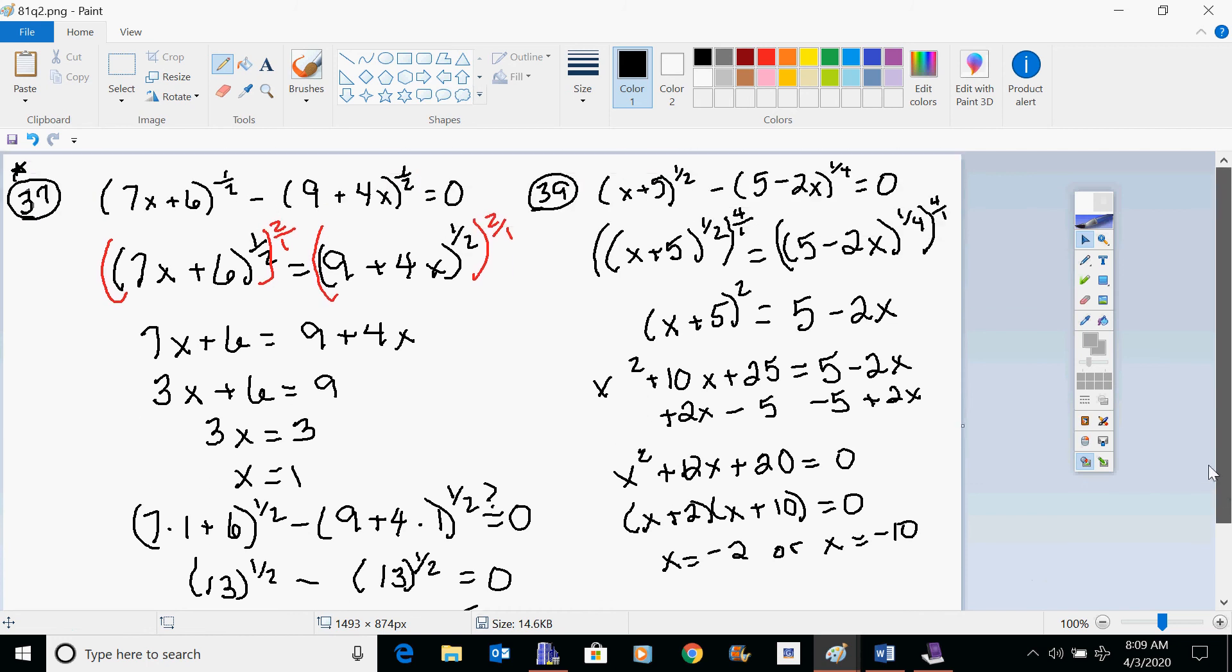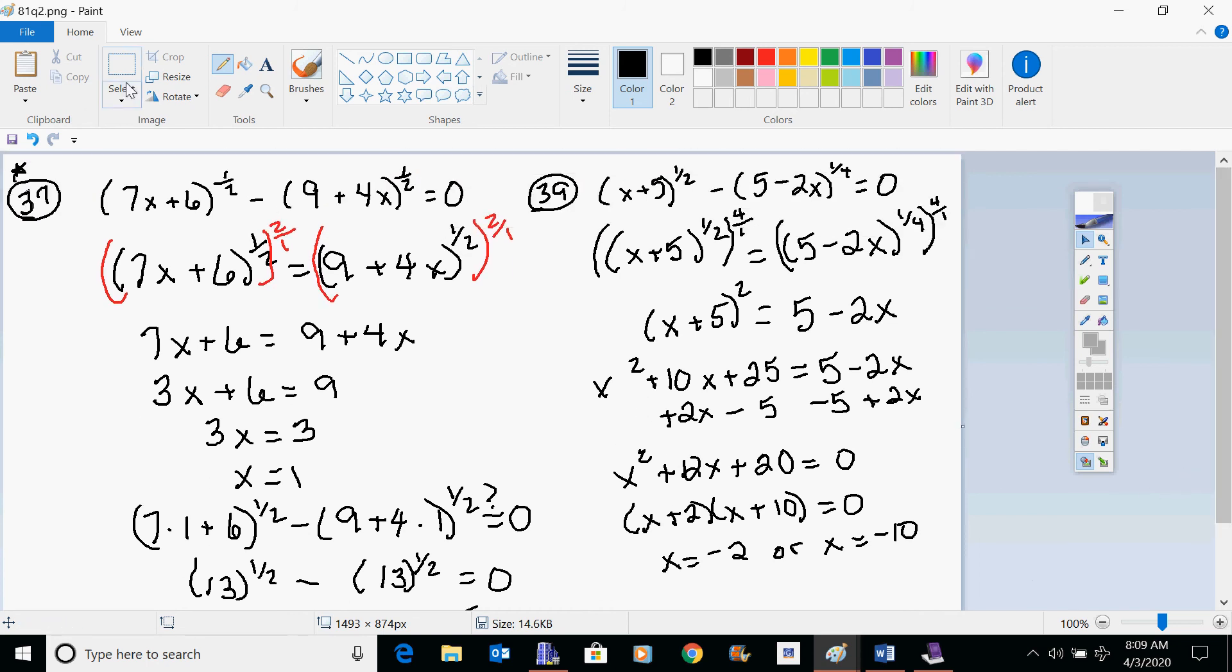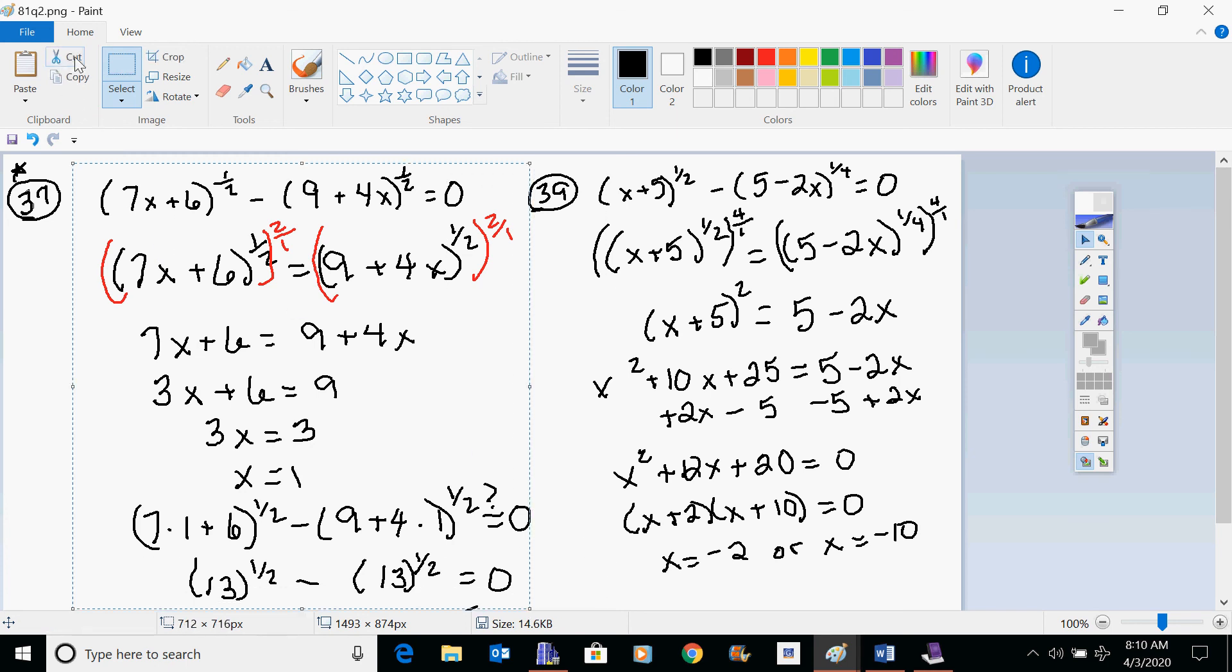And then we want to look for factors of 20 that add together to give us 12, and that would be 2 and 10. So that would make our two answers x is negative 2 or x equals negative 10. You would possibly want to plug that in to check. I'm out of space, so I'm going to get rid of this real quick.